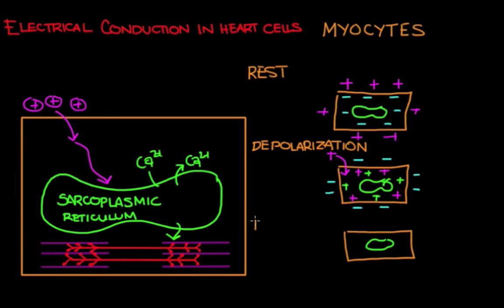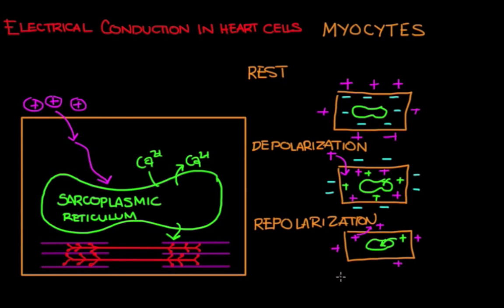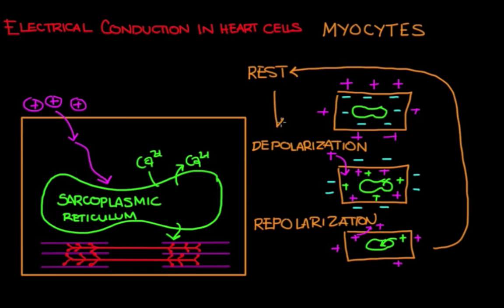Shortly after depolarization, the cell repolarizes — this is called repolarization. The positive ions that were in the cell get shuttled out through channels, so the outside becomes more positive, and the calcium ions go back into the sarcoplasmic reticulum. This is the cell's way of reestablishing the resting membrane potential, and eventually it reaches that potential and is ready for depolarization again.